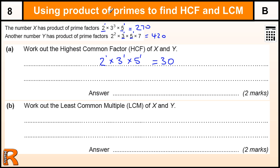So we've got 2 times 3 times 5, which is 30. That's generally the way you do it — you take the smallest power of the prime number that's in both, and if it's not in both you can't use it. Now, work out the least common multiple of x and y.